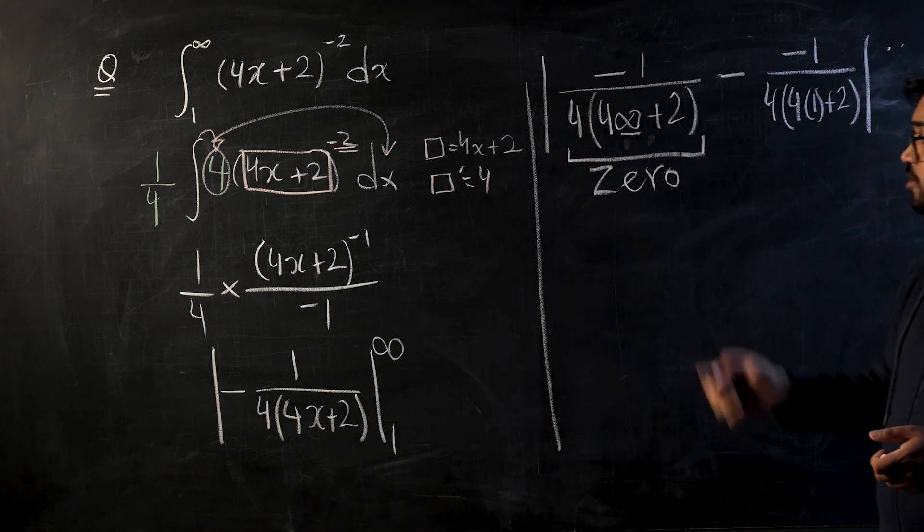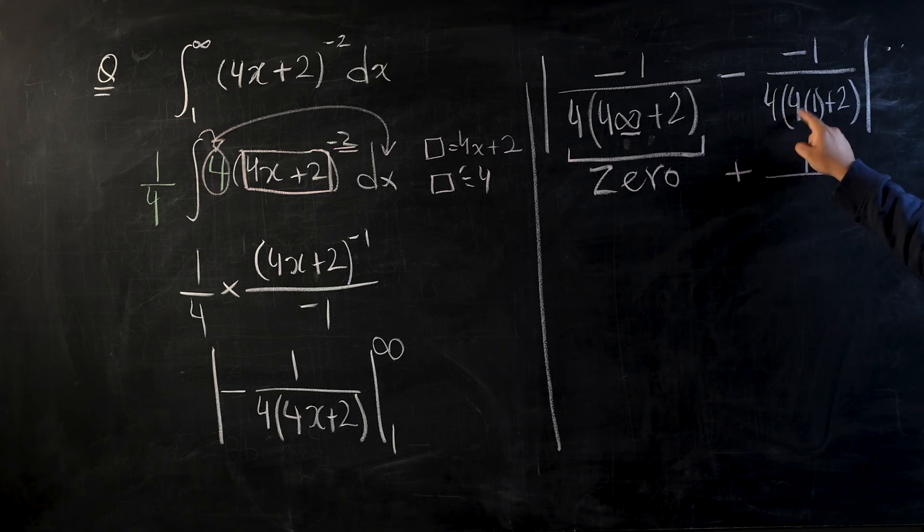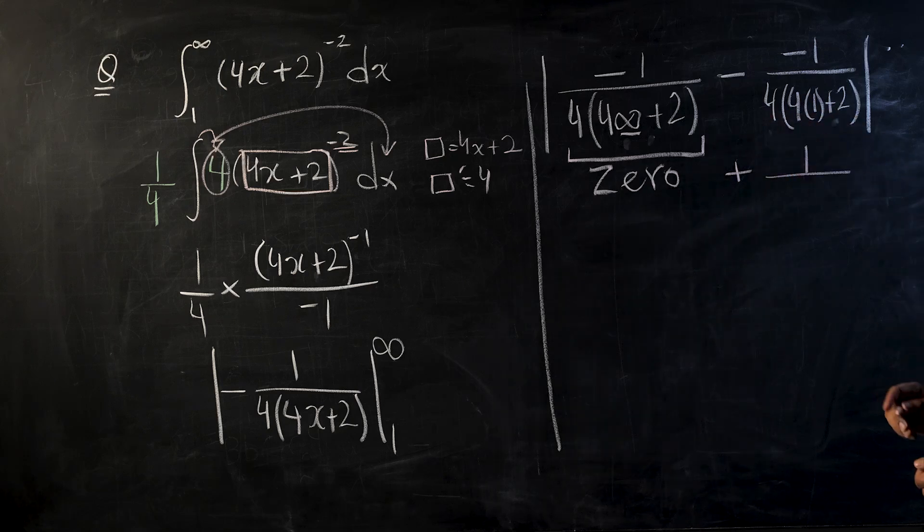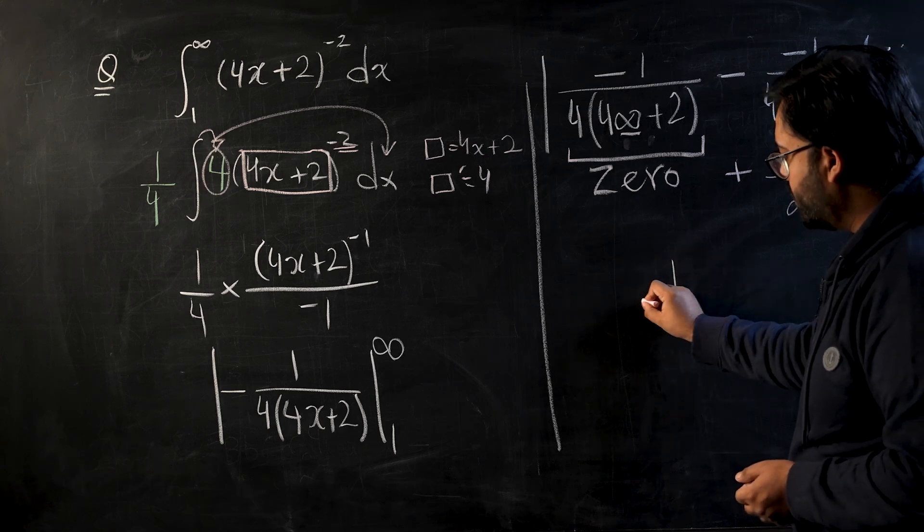So this whole thing will become zero because the denominator has become so big. So minus and minus this will become plus 1 over, so this will be 4 plus 2 would be 6, and 6 into 4 is 24. 0 plus 1 over 24 will become 1 over 24, and this is your final answer.